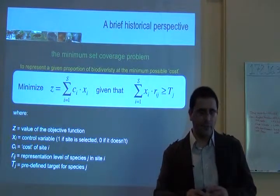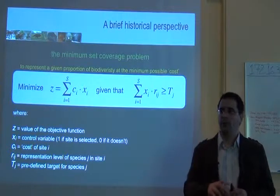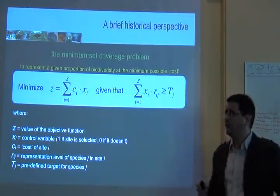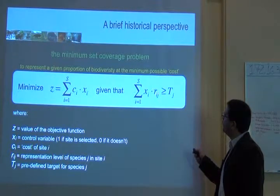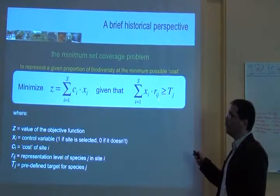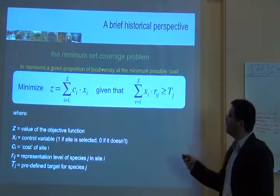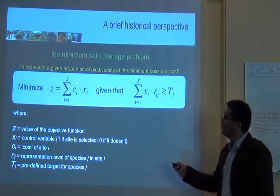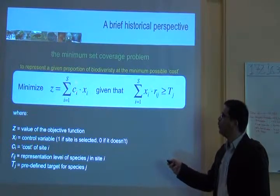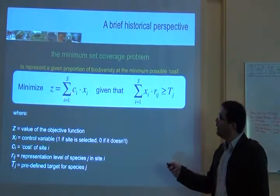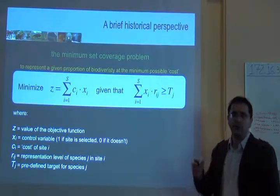If you have a solution for the problem, and the solution involves selecting five places, in those five places you have 10% of the distribution of that species J or more, then those five places will be selected. You multiply and sum the cost of all those five places, and the summation of those five places will be the value of your objective function Z.